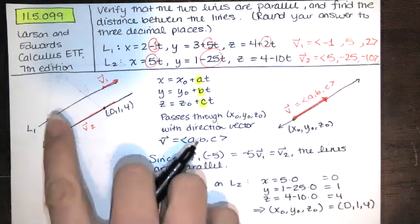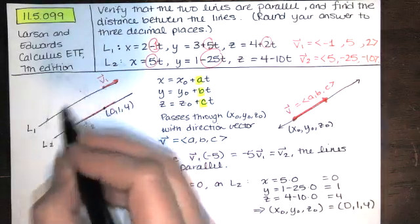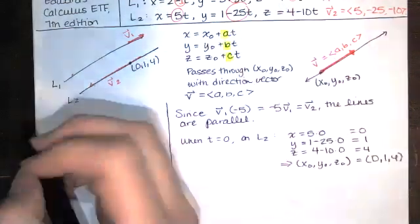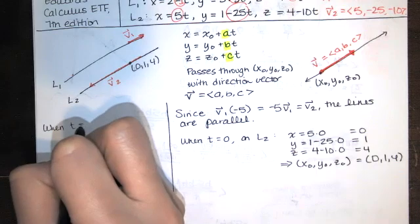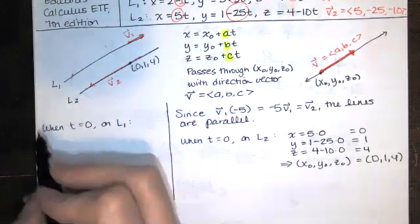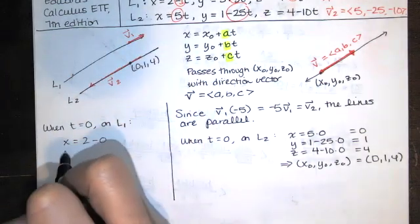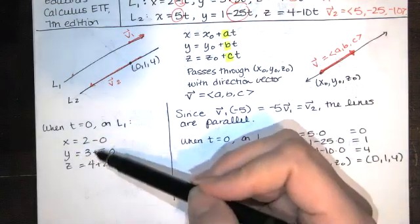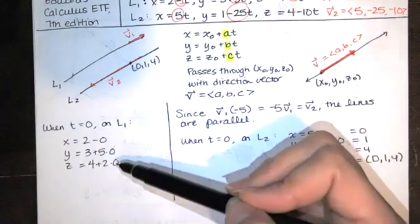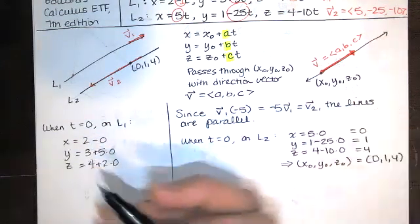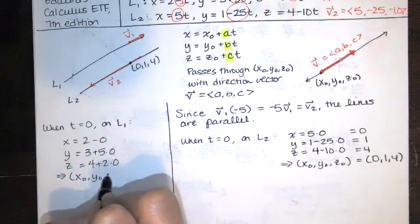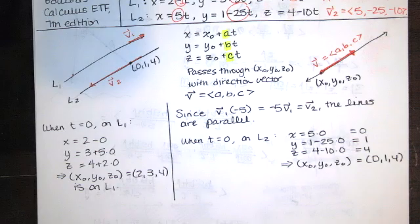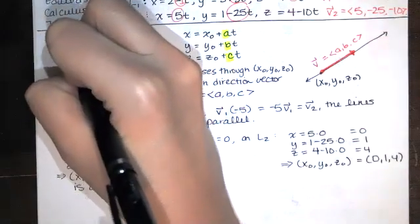To find a point on line one, I also substitute t = 0. We get x = 2 − 0, y = 3 + 5(0), and z = 4 + 2(0). So when t = 0, we're at the location x = 2, y = 3, z = 4. The point (2, 3, 4) is on line one.